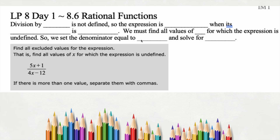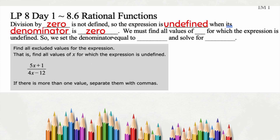We're going to start looking at rational functions. Division by zero is not defined, so the expression is undefined when its denominator is zero. This is important because we actually have to find these limits in order to understand what value of x the variable cannot be.